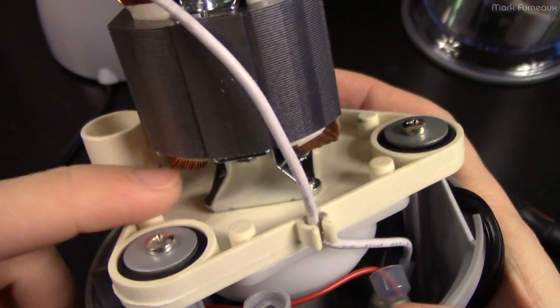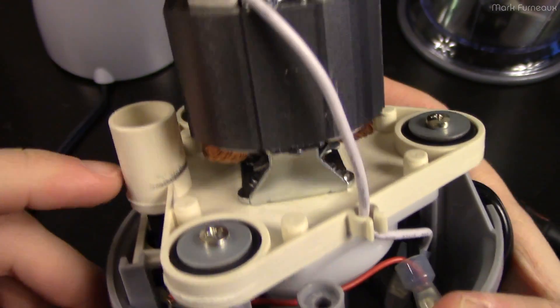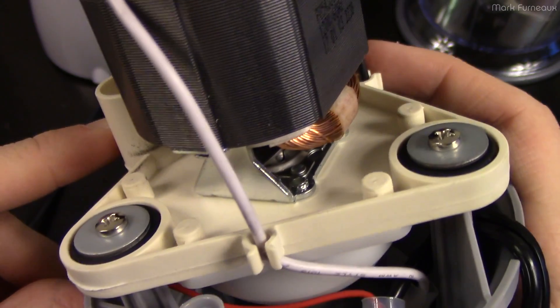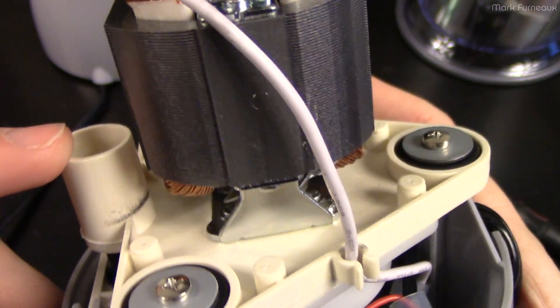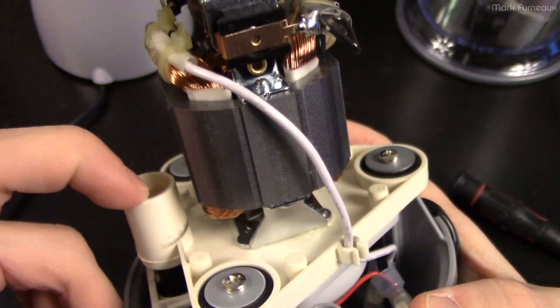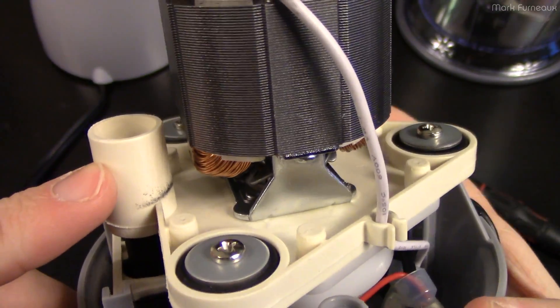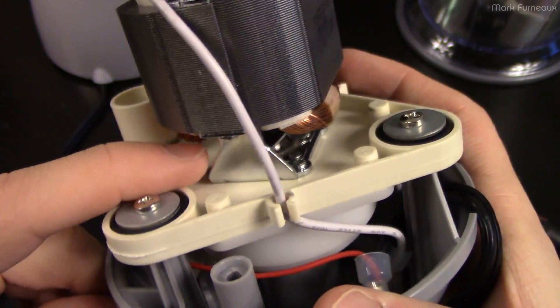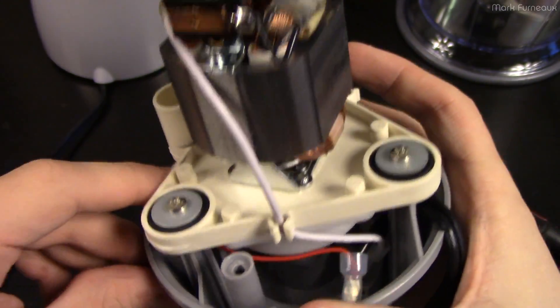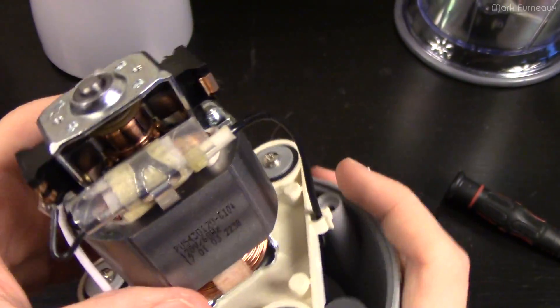You can actually see that there's a little bit of black gunk that's been thrown out onto this plastic. Probably from a bearing or possibly... I mean, it's probably from the brushes. Is it from the brushes? I kind of doubt that because it would have to travel pretty far. I suspect that might be just crap from the bearing or something down here that's flung out.